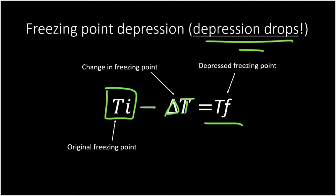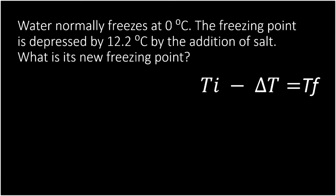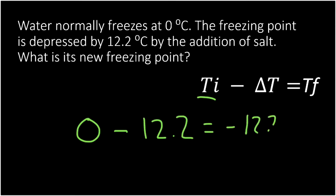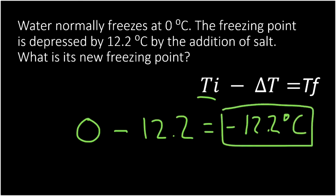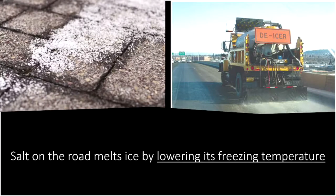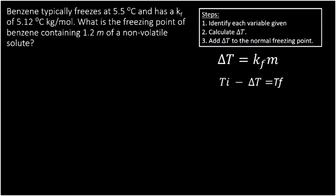Let's look at an example with numbers. Water normally freezes at zero degrees Celsius. The freezing point is depressed by 12.2 degrees Celsius by the addition of salt. So we take zero minus 12.2, giving us negative 12.2 degrees Celsius. Notice that our freezing point is now lower — it has to be colder to freeze that solution. Going back to our original question: why does salt on the road cause ice to melt? Because it lowers its freezing temperature. If it's negative two outside and there's a bunch of salt in the water, it won't freeze. The more salt you add, the more it depresses that freezing point.